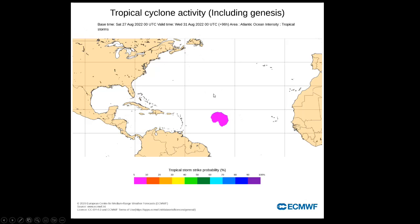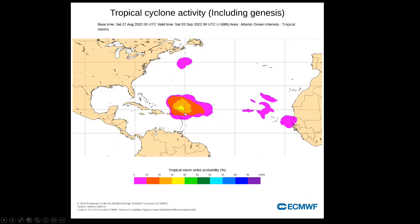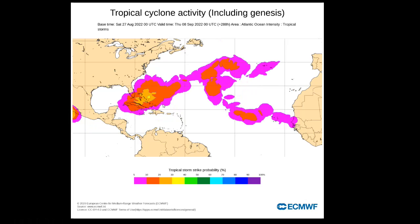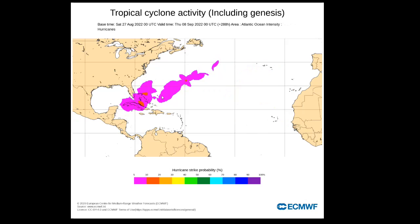Here's the 0Z GFS ensemble for tropical storm strike probabilities. Valid through Tuesday night 8 p.m., then Friday night for this upcoming week, you can see values beginning to enhance. By next Monday night, it's coming into the islands and the Bahamas. By Wednesday night September 7th, the ensemble shows a tropical storm somewhere within the Bahamas. And the hurricane probabilities are continuing to increase — showing a 10 to 20 percent chance of a hurricane in this area by Wednesday September 7th at 8 p.m., roughly 11–12 days away. There are a few members that try to curve this out earlier, but overall I think this is going to get very close to, if not into, the Bahamas in the longer term.